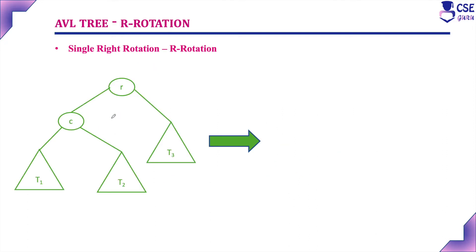Looking at the general form: here is the root node, and here is the child node with its left and right subtrees. If you check the balance factor — for leaf nodes the balance factor is always zero. Here it is one minus one, which is zero. Here the number of nodes in the left subtree is two and the number in the right subtree is one, so two minus one equals plus one. Now the tree is balanced.